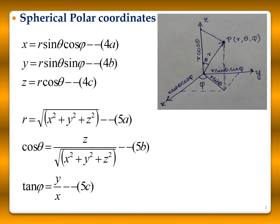So X = R sin θ cos φ, Y = R sin θ sin φ, and Z = R cos θ. Conversely, in terms of X, Y, Z: R = √(X² + Y² + Z²), cos θ = Z / √(X² + Y² + Z²), and tan φ = Y / X.